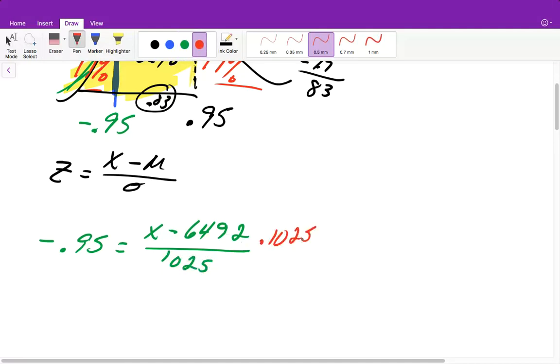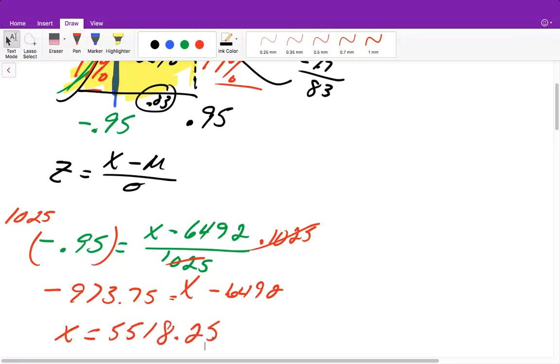Then we will multiply each side by 1,025 to get rid of this. 1,025 times 0.95 equals negative 973.75, which equals X minus 6,492. So then we will add 6,492 to this. So then our X value equals 5,518.25.